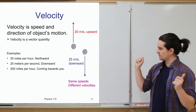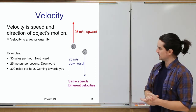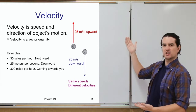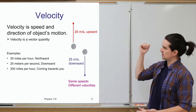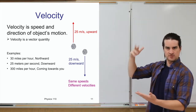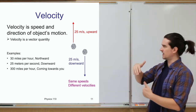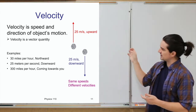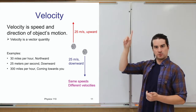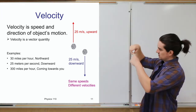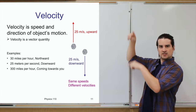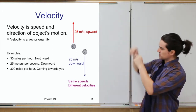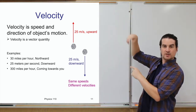Examples of velocity: 30 miles per hour northward, or 25 meters per second downward. If you draw a picture of an object, you can indicate its velocity with an arrow. The direction of the arrow shows the direction of motion, and the length is indicative of the amount — the speed. A much larger arrow would indicate a much larger speed, still in the same direction.